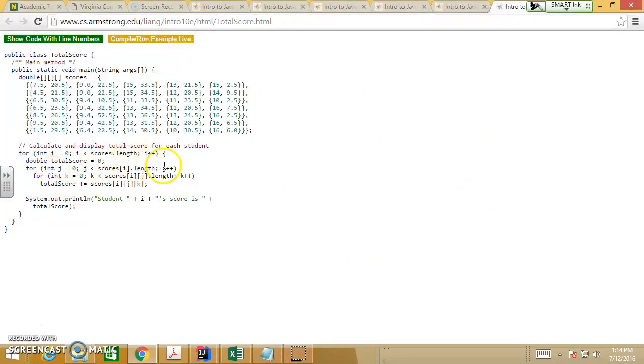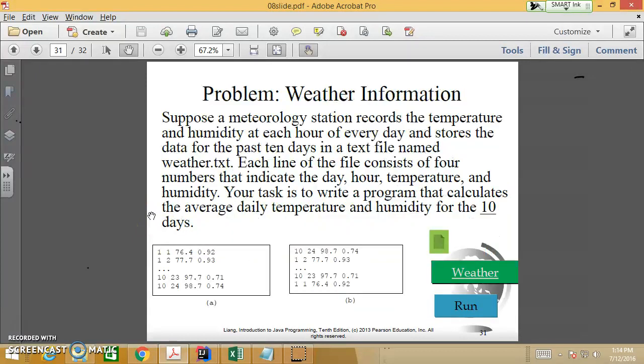So we iterate to each exam, which has two parts, so get score for each part. And total them. And print out the score out. All right, so that's how we write an application for the student scores.